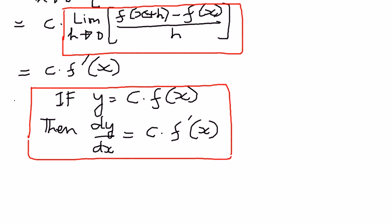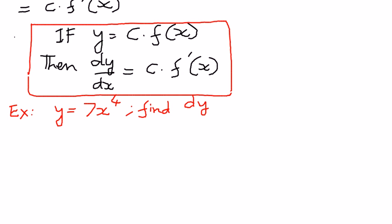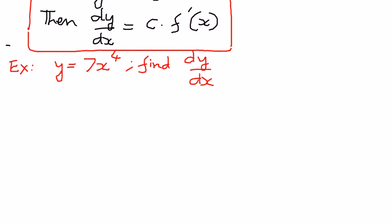Let us take a simple example based on this. If y is equal to 7x to the power of 4, where 7 is a constant and x to the power of 4 is a power function, we want to find dy by dx. We're going to find the first derivative: dy by dx is going to be equal to 7, which is a constant, and we're going to use the power rule only for x to the power of 4.